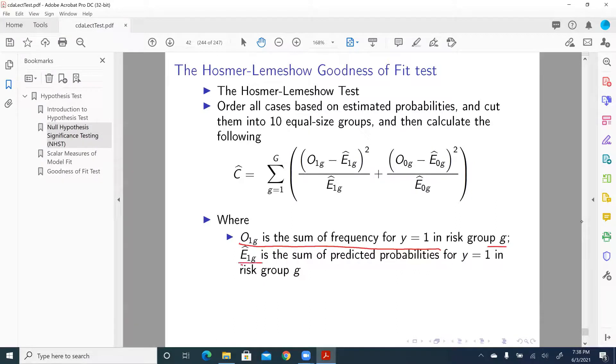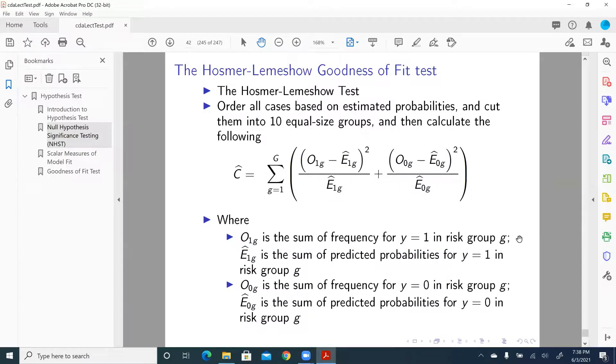That E1G hat, so in group G, is the sum of predicted probabilities for Y equal to 1. So for every single case, there is a predicted probability Y equal to 1. Even though some cases have Y equal to 0, they still have a probability for Y equal to 1. So we're going to add them up to get this number, and we subtract them, square that, divided by E1G hat. Then we're going to do the same for Y equal to 0. So that's for one group. Then we do group two, group three, group four, five, till group 10. Add them up, summation sign, we get this C statistic.